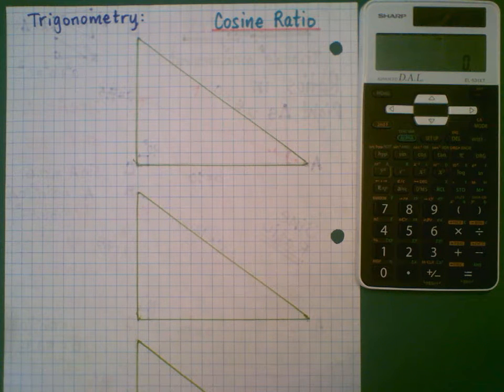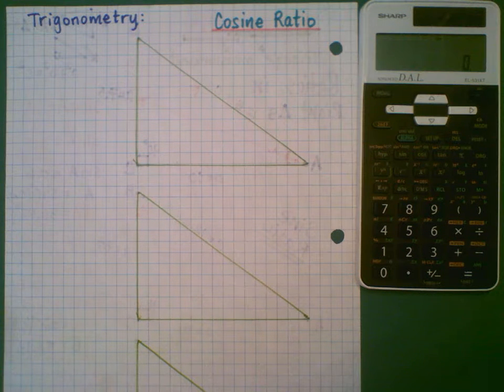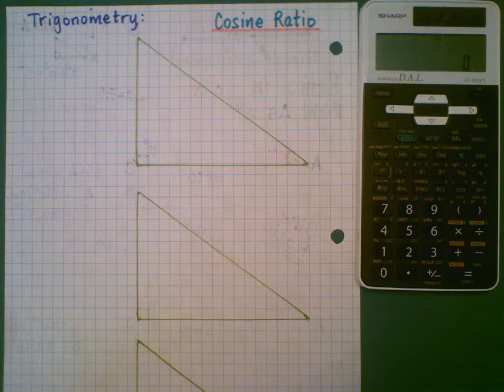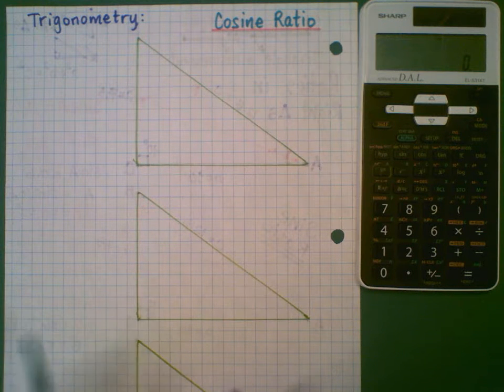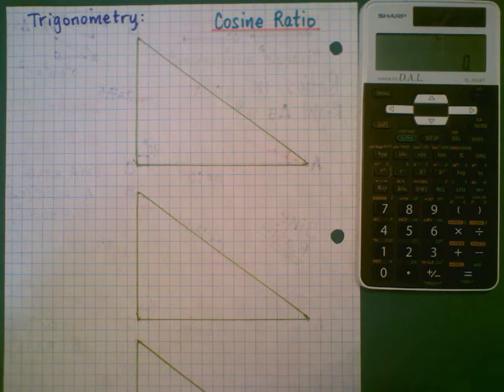Hello. In this video, we're going to be talking about the cosine ratio, which is one of the primary trigonometric ratios in right triangles.